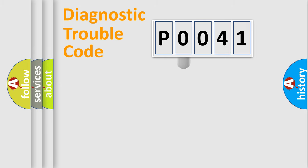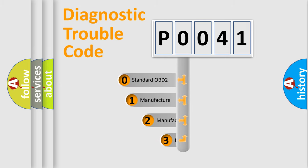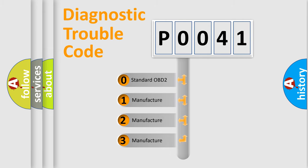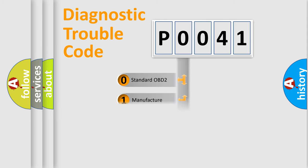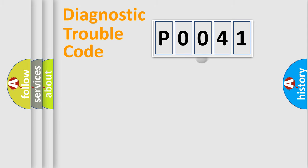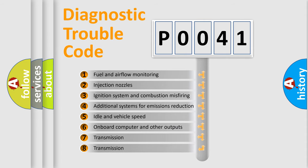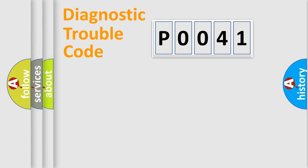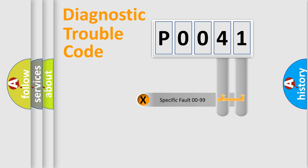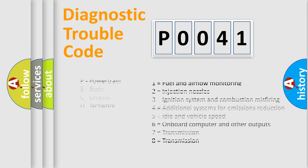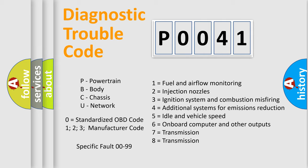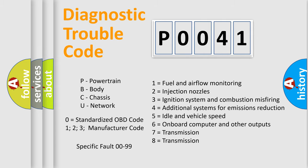This distribution is defined in the first character of the code. If the second character is expressed as zero, it is a standardized error. In the case of numbers 1, 2, or 3, it is a more manufacturer-specific expression of the error. The third character specifies a subset of errors, valid only for the standardized DTC code. Only the last two characters define the specific fault of the group.